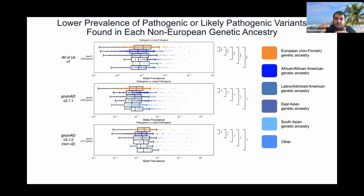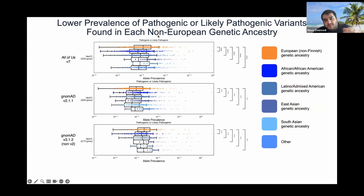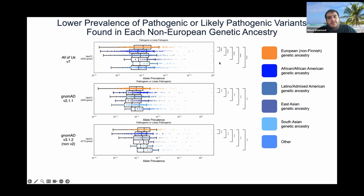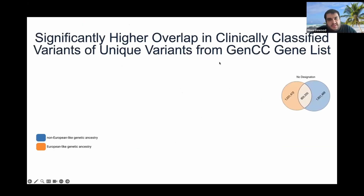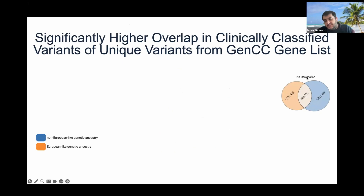Breaking this down systematically for each non-European ancestry subgroup, there is a lower prevalence of pathogenic or likely pathogenic variation found in each non-European ancestry group — a systematic comparison of each group against the European ancestry group, consistently in the same direction. Looking at this Venn diagram of variants with no designation — not yet seen clinically — there's reasonable overlap of about 800,000 variants and about 1.5 to 1.8 million exclusive to each side. Comparing this to other clinical categories, the overlap is significantly bigger there, suggesting our understanding is predominantly driven by variants found in individuals of both European and non-European ancestry.